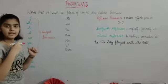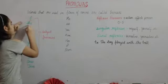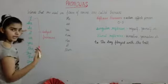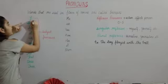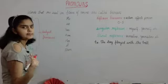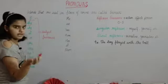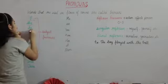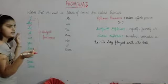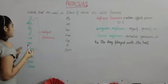I — yani ki jo madab mere liye, khud ke liye use hota hai, usko kehte hain I. She — yani ki koi girl ke liye use hota hai. He — yani ki koi boy ke liye use hota hai. Like, I ka example: I am playing cricket, I am playing football. She ka example: She is dancing. He ka example: He is singing. It ka example: It is a building.